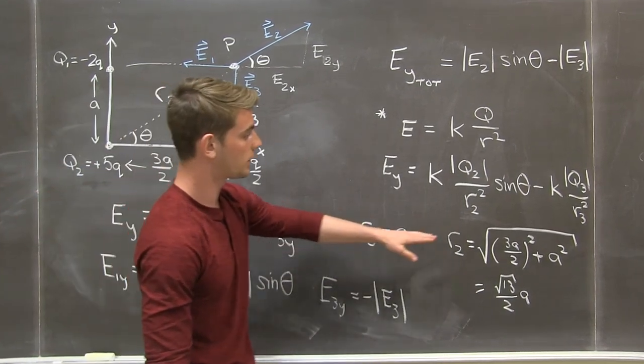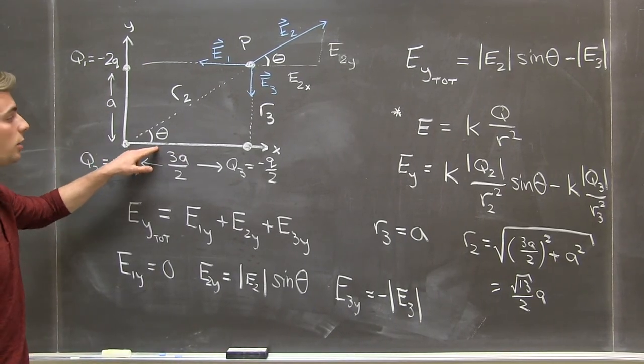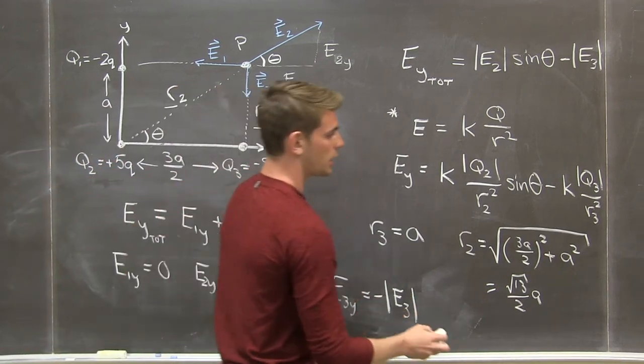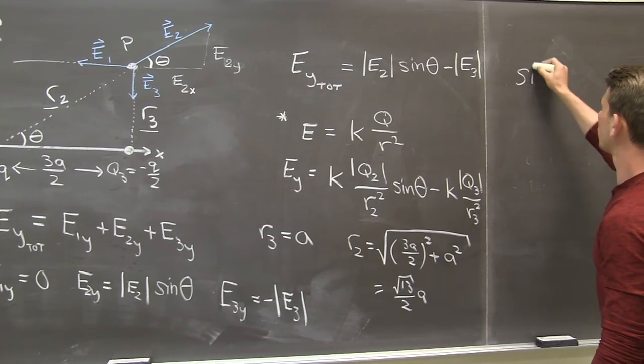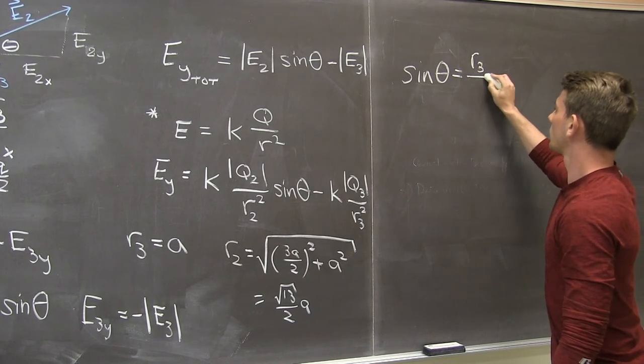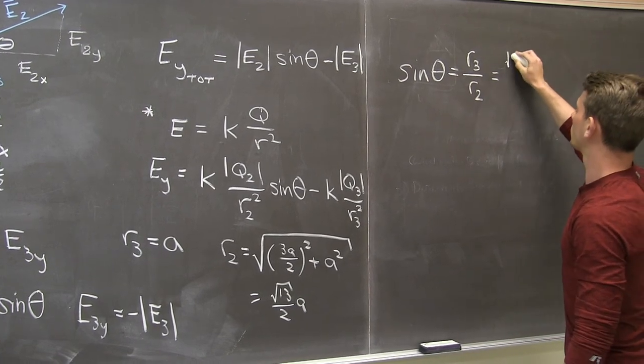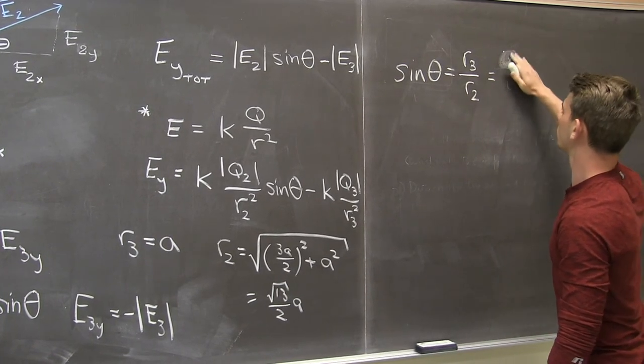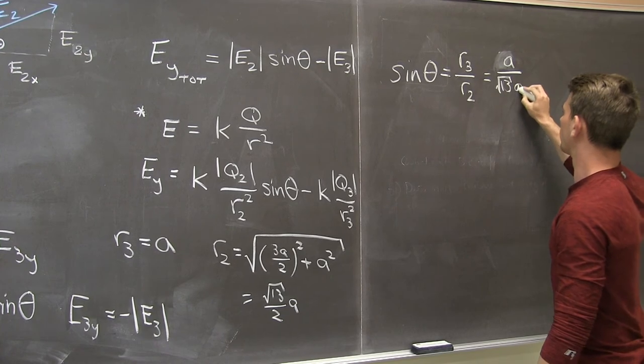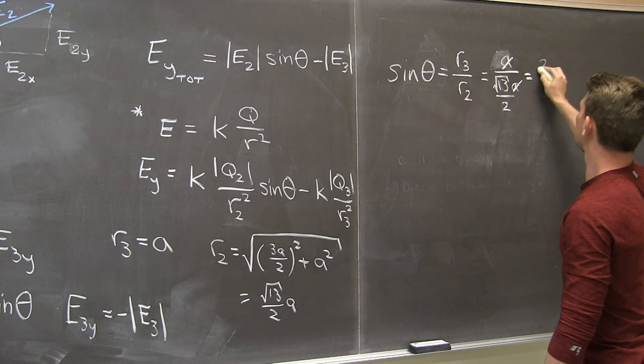Lastly, what we don't know is sine of theta. And that's given also by this triangle and we can see that sine, being the opposite over the hypotenuse, is just r3 divided by r2. Or in terms of a, we have just a over the square root of 13 a over 2. These cancel and we get 2 over the square root of 13.